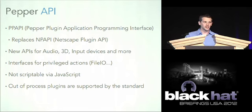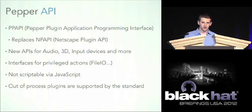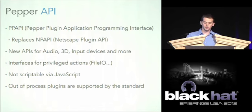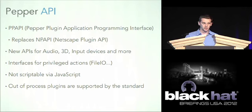In a properly sandboxed browser, a privileged interface like file I/O wouldn't be handled by the browser itself — it would be passed off to a privileged component like the Chrome broker process. Another major difference between Pepper and NPAPI: Pepper is no longer scriptable via JavaScript the way NPAPI was. In NPAPI there was NP runtime where you could bind JavaScript calls to C++ calls and call them from any website — that's gone now. This greatly reduces the attack surface that existed on NPAPI plug-ins.